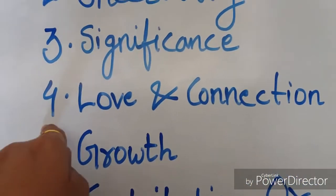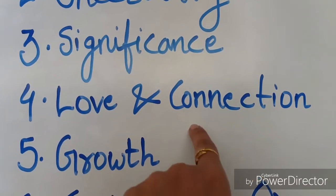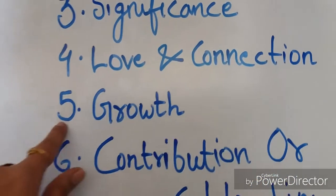Fourth is love and connection. People are social animals. They always want to get surrounded by their friends and family members. And fifth is growth.